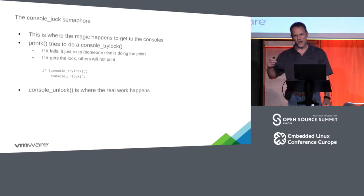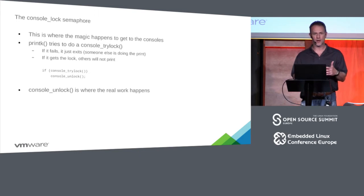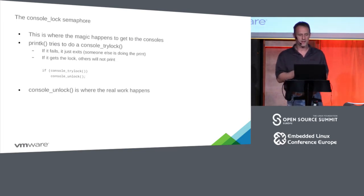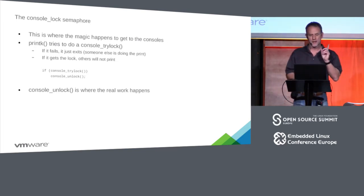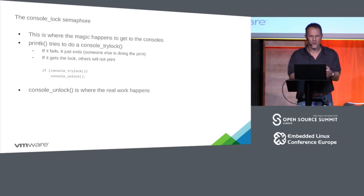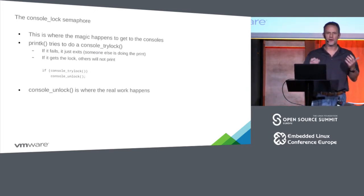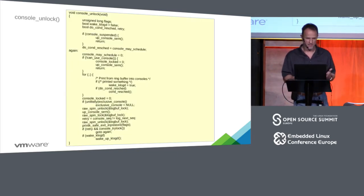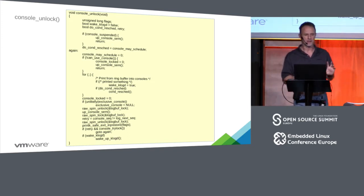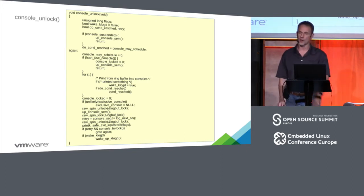The console lock isn't the big deal — you can easily get it. The magic is in console_unlock. When you look at printk today and find console_lock, you'll see this: if console_trylock, console_unlock. You might think: what are you protecting? That's because console_unlock is a behemoth. This is the console_unlock code with a lot removed — I stripped out all comments and condensed the for loop, because there's a lot of work in there.